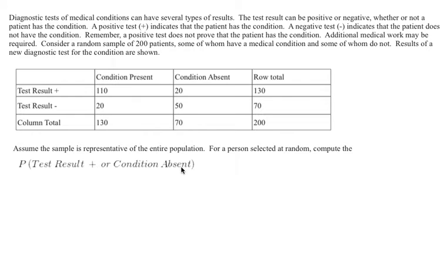This problem can be done two different ways. One is just to count how many people have a combination of these, and the other way is using the addition formula. I'm going to do the problem both ways. So first we'll start off with the probability of a test result positive or condition absent by just counting.